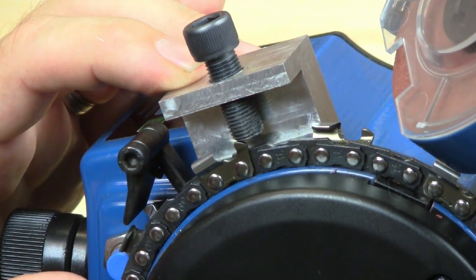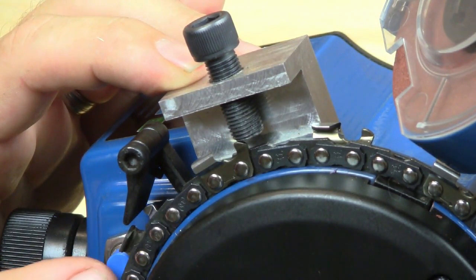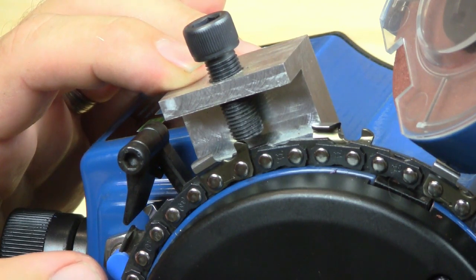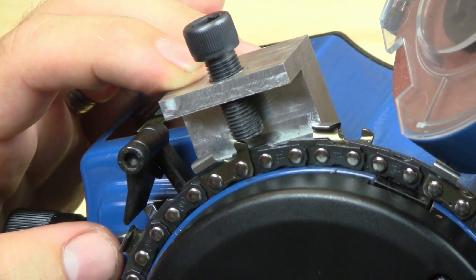.025 is standard for most chains. You might want to check with your chain manufacturer's specifications to see if they want something different, but most chains use .025.